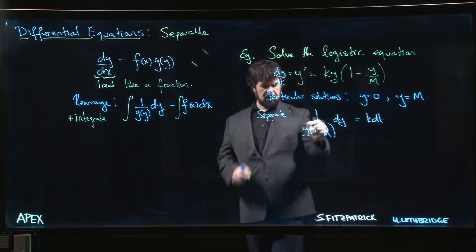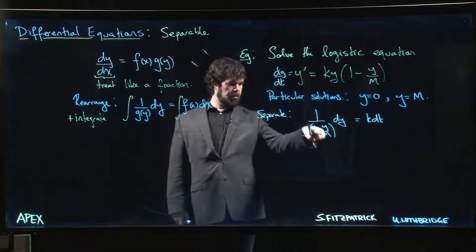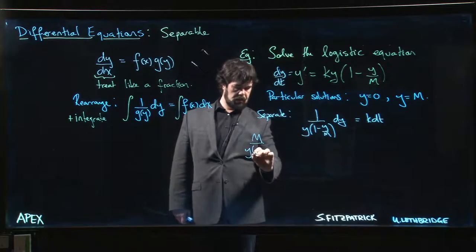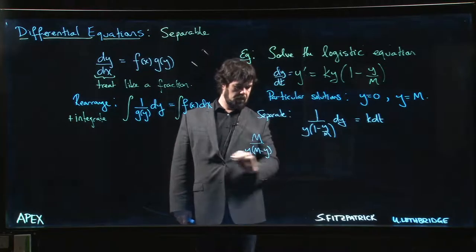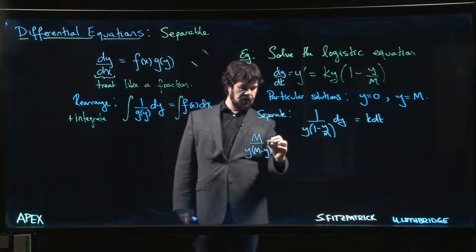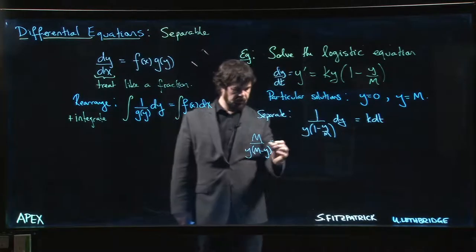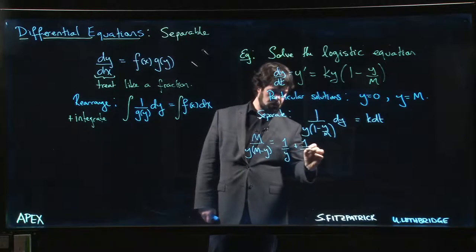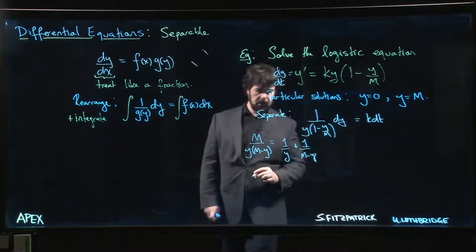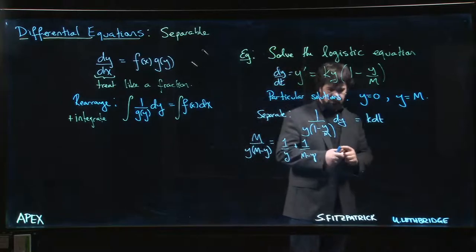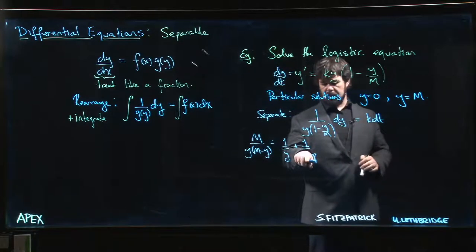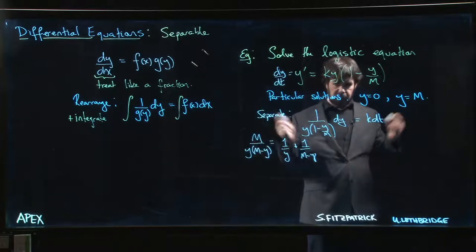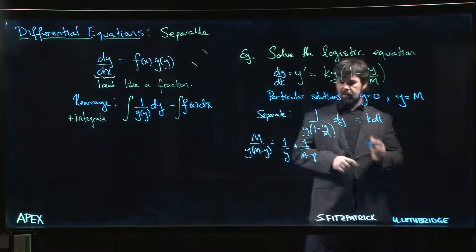And now this bit here we can rewrite. If we multiply this top and bottom by M, we can write that as M over y times (M - y). And if you do a partial fraction decomposition on this, you'll find that you get 1/y plus 1/(M - y). You can check: if you put this back over a common denominator you get M - y plus y, you get back over to there as expected. So we separate, we integrate.